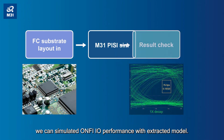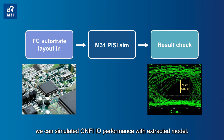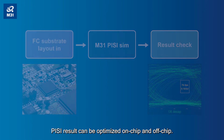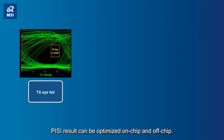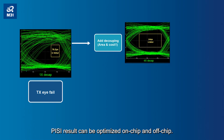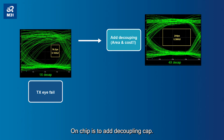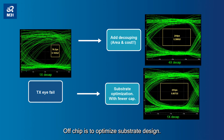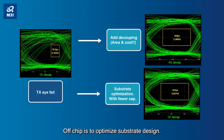After substrate design is done, we can simulate ONV I/O performance with an extracted model. PISI results can be optimized both on-chip and off-chip. On-chip optimization is to add decoupling capacitors; off-chip is to optimize the substrate design. Considered together, an optimized package can achieve signal quality with lowest cost.